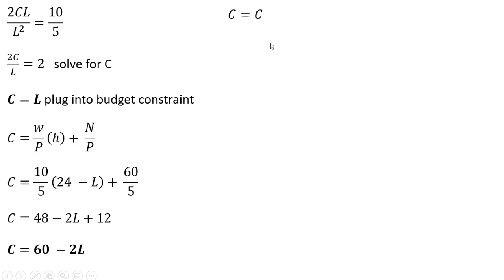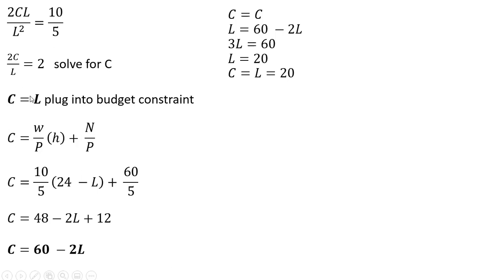We now have two equations for c: c equals l and c equals 60 minus 2l. Setting them equal, we get l equals 60 minus 2l, and solving for l, the utility maximizing hours of leisure equals 20. Since c equals l, the utility maximizing number of purchases equals 20 units. Hours of work equal 24 minus l, so this person works four hours.